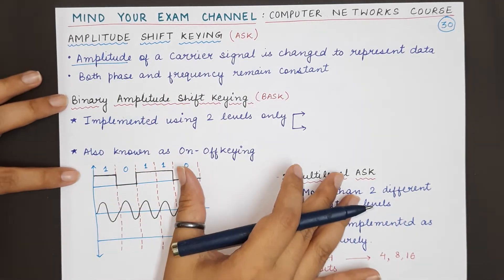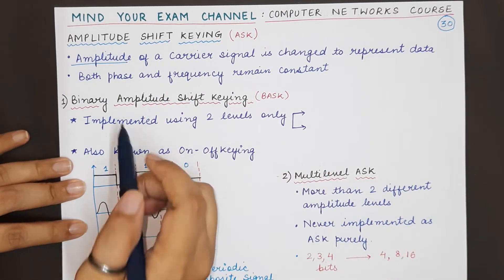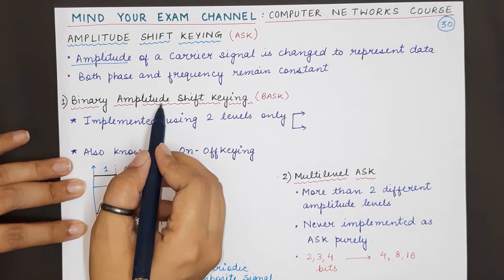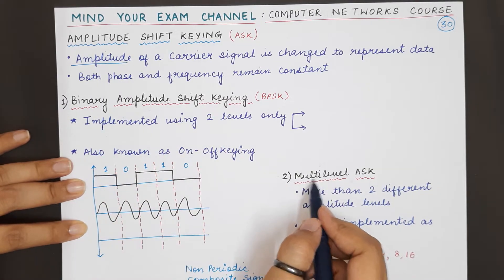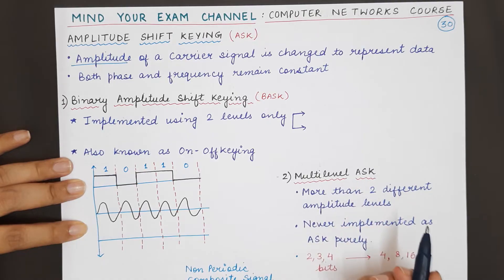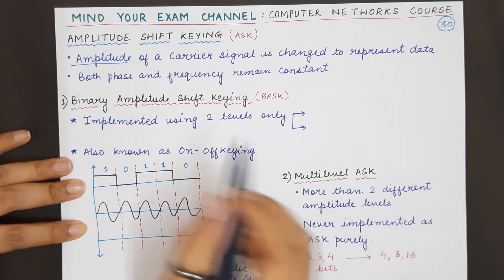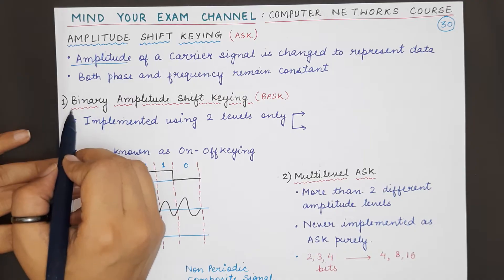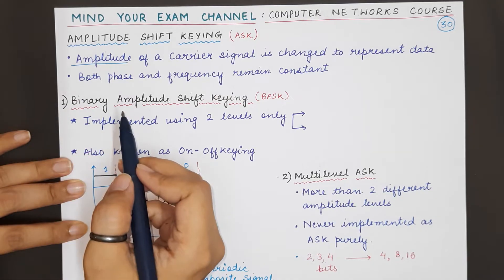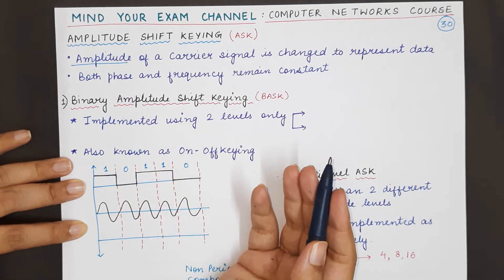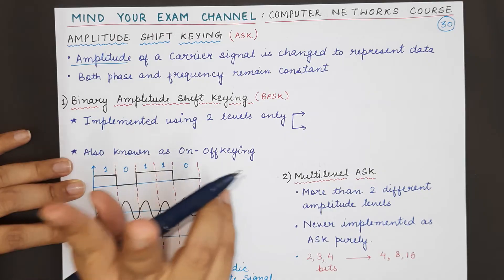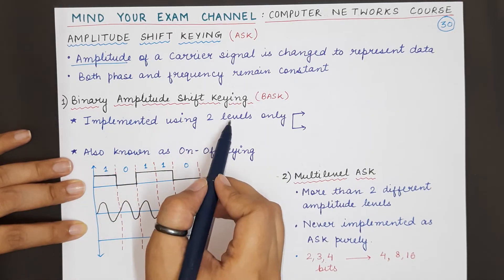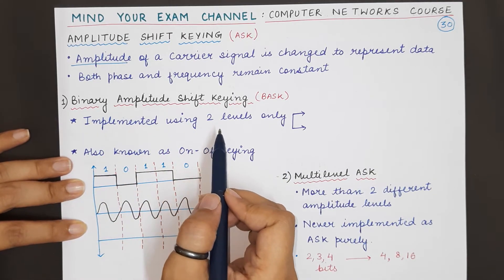There are two major types of amplitude shift keying: binary amplitude shift keying and multi-level amplitude shift keying. Binary amplitude shift keying means it will be implemented using two amplitude levels, since binary means two.